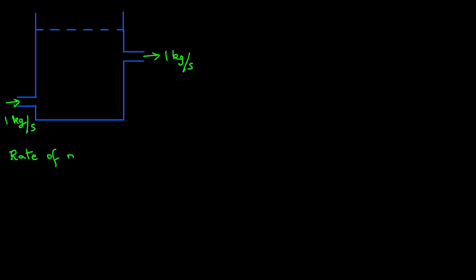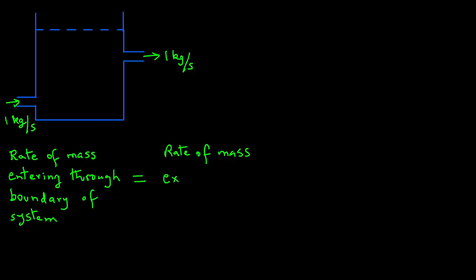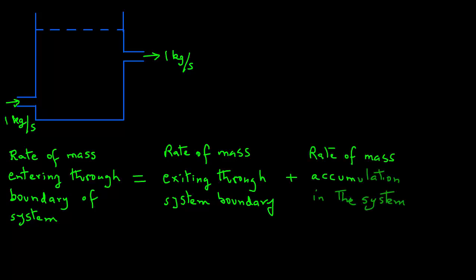And the equation will be something like this in words: that rate of mass entering through the boundary of a system, so we will have a boundary drawn around this tank, rate of mass entering through the boundary of a system equals the rate of mass exiting through that system boundary plus rate of mass accumulation within the system. So if the rate of mass accumulation or depletion is zero, then of course,